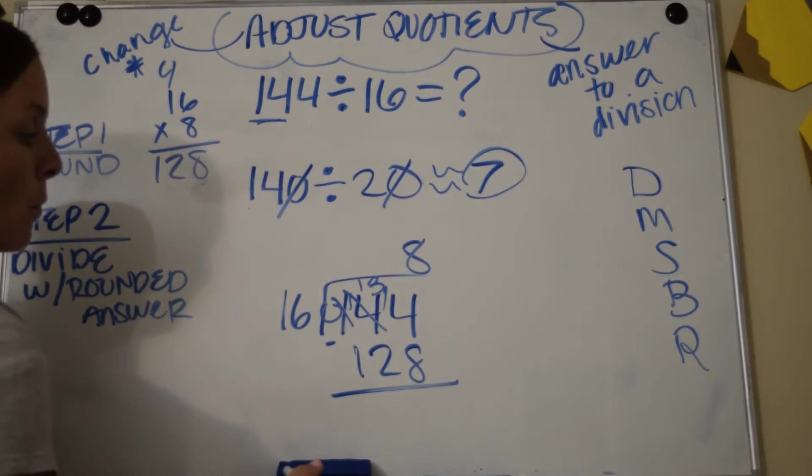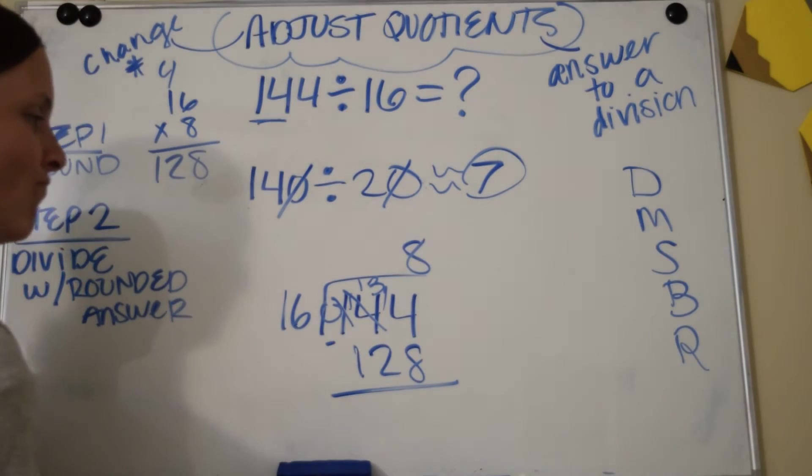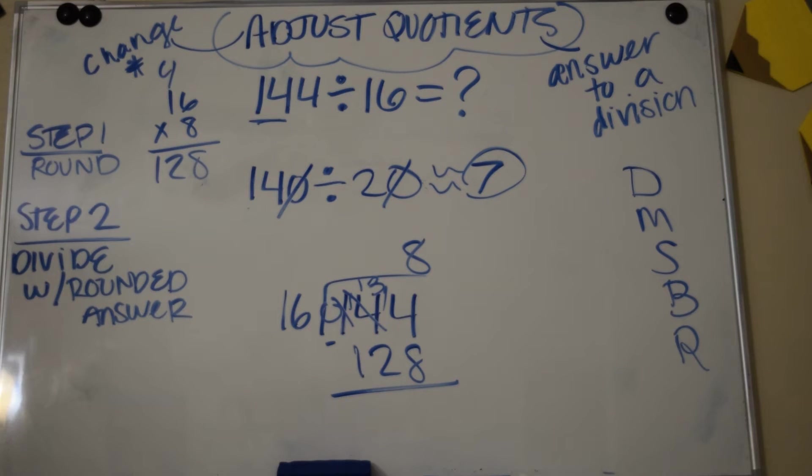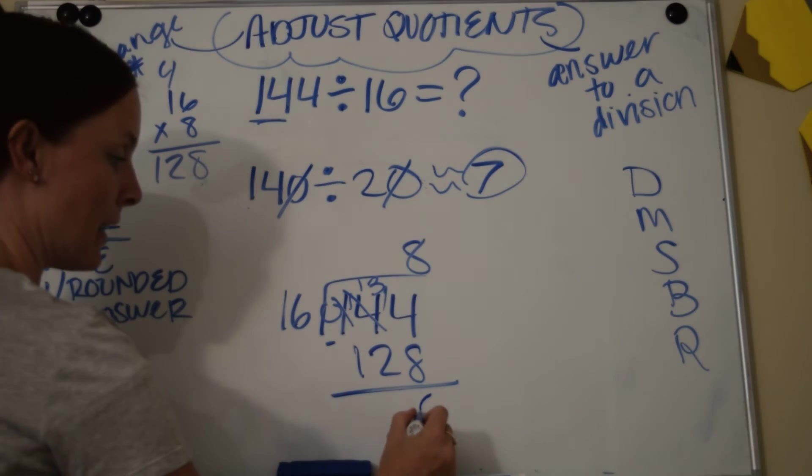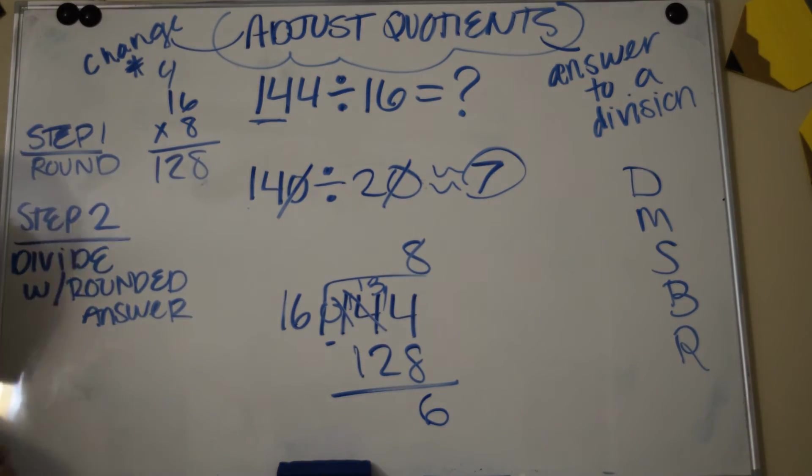So 14 take away 8 is, well let's see. And if you don't know this on top of your head, let's remember our strategies. Well, I know that 14 minus 7 is 7, but I'm subtracting one more than 7, so that would be 6. So 14 minus 8 is 6. 13 take away 2 is 11.